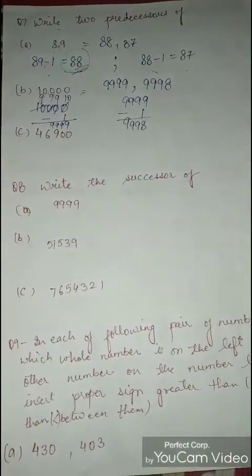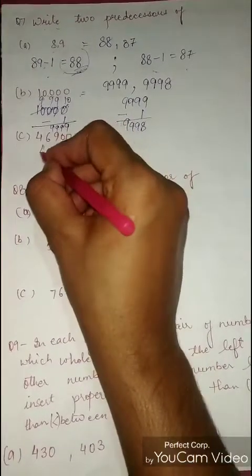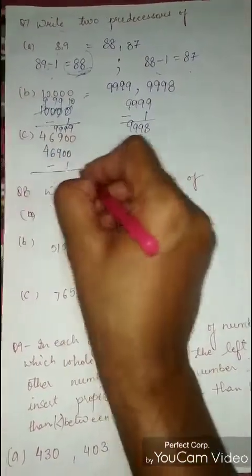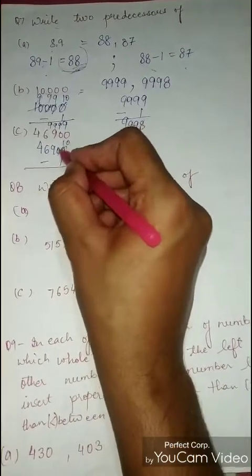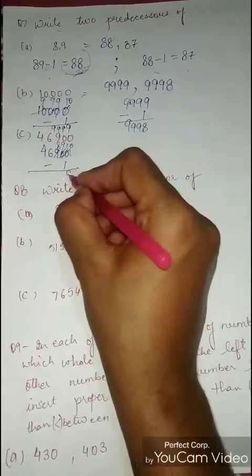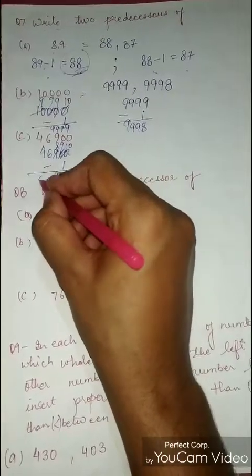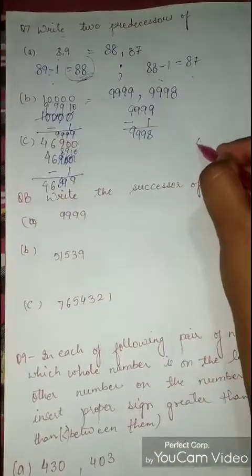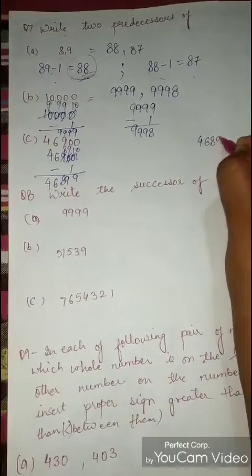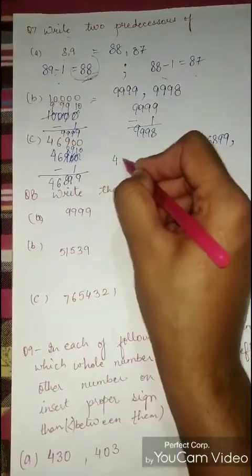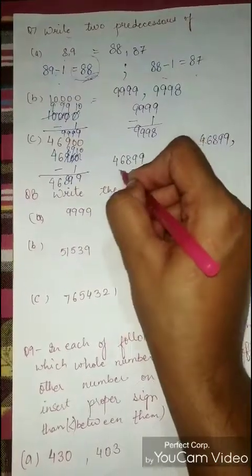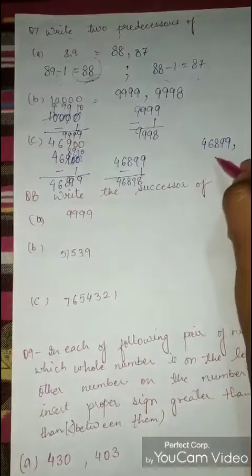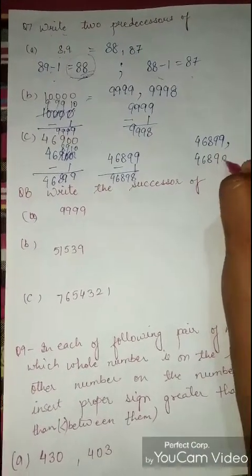Next number is 46900. For the first predecessor, subtract 1 to get 46899. For the second predecessor, subtract 1 again to get 46898. So the two predecessors of 46900 are 46899 and 46898. In this way we find two predecessors by subtracting 1 each time.